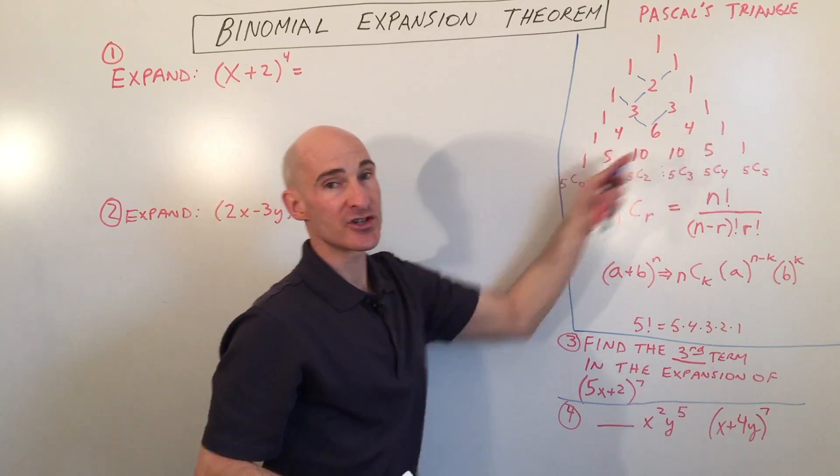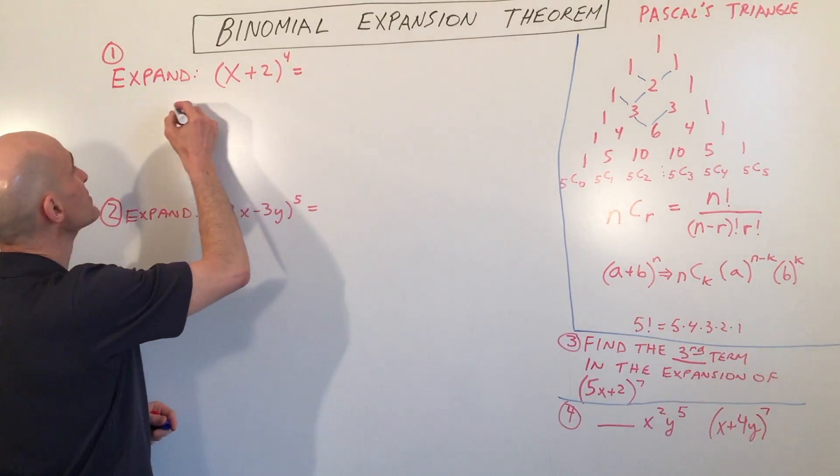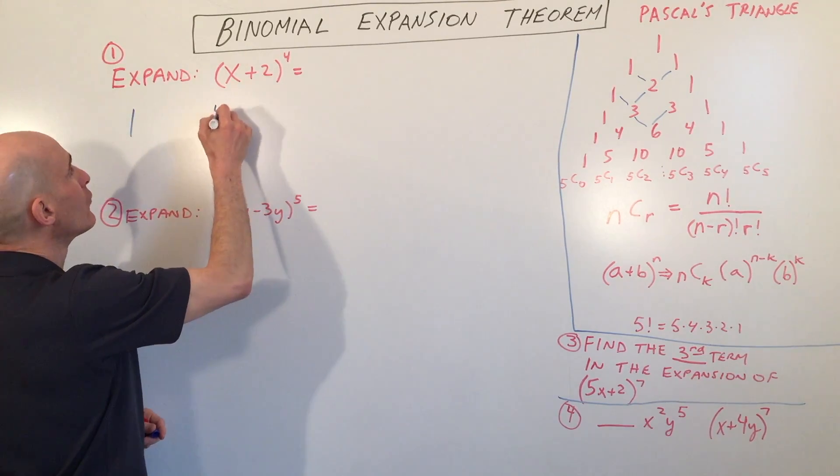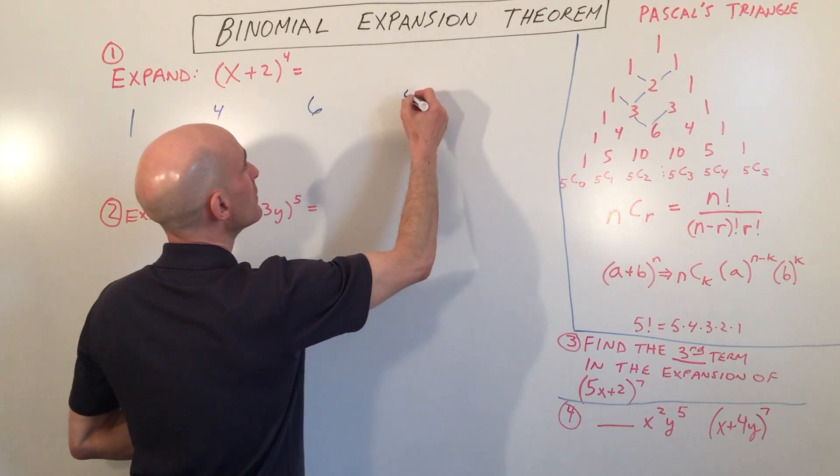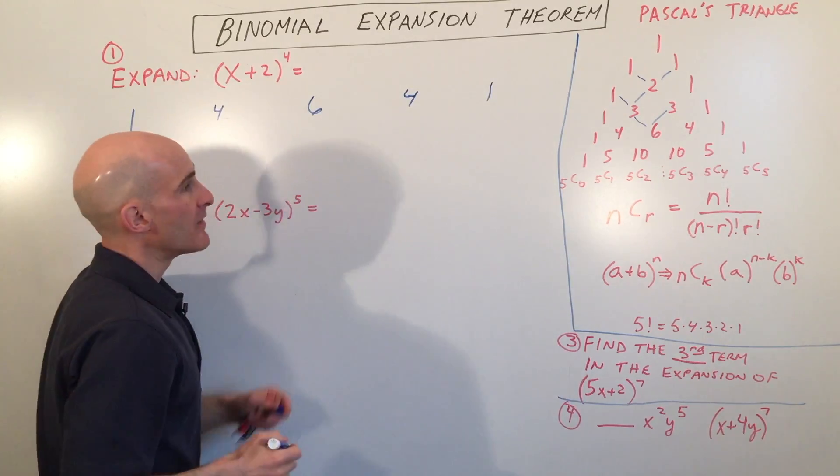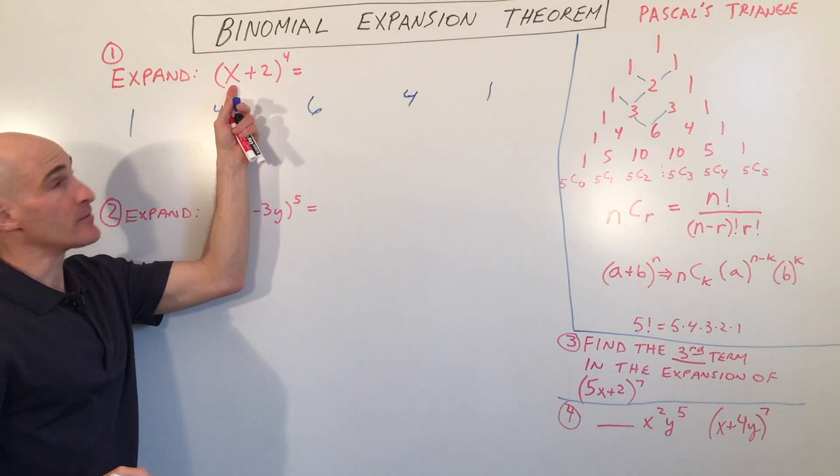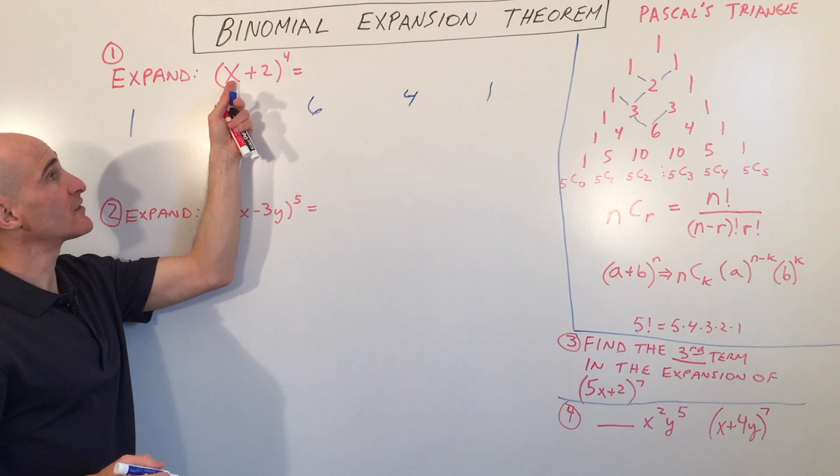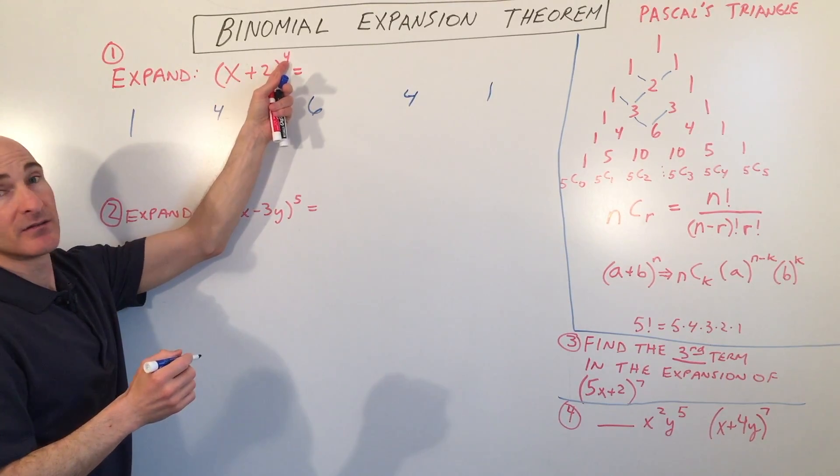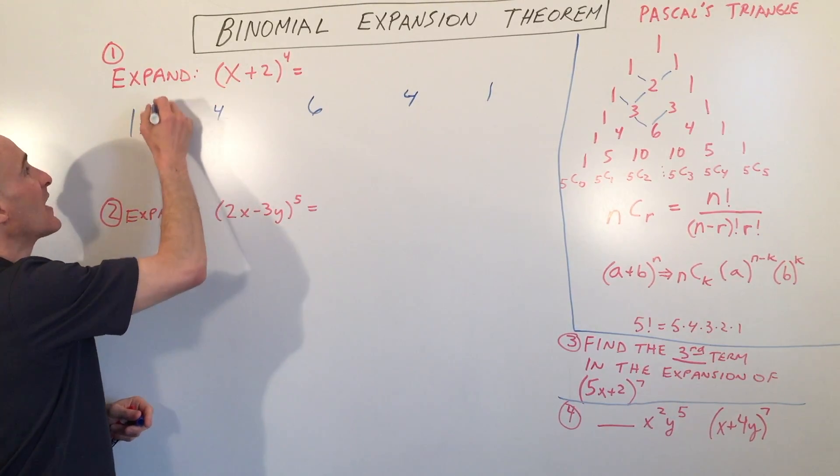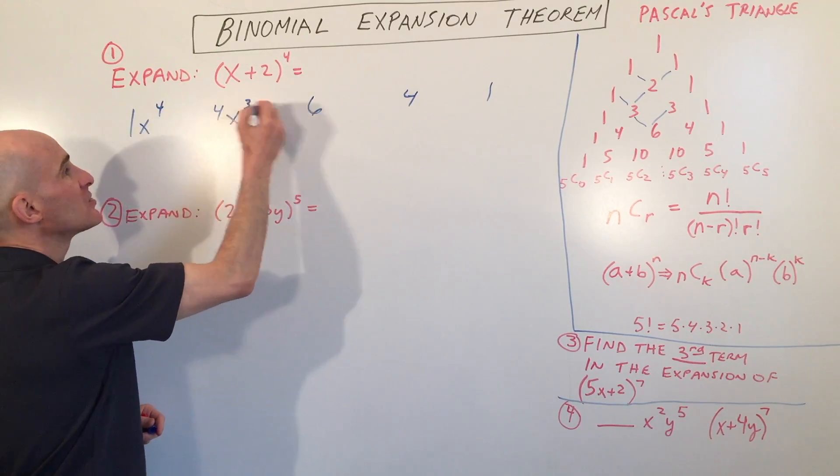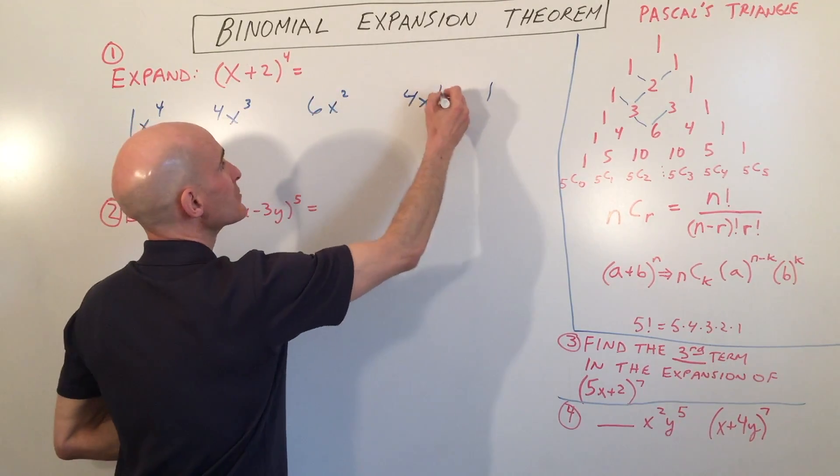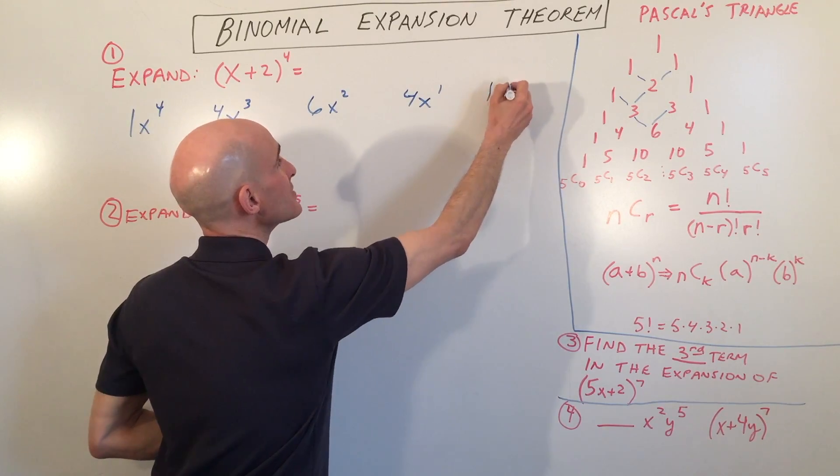These are going to be our coefficients. So I'm going to write this out as 1, 4, 6, 4, and 1. And then what I'm going to do is I'm going to take this first term, because a binomial is two terms, I'm going to take the first term to the highest power here. So that's going to be x to the fourth, x cubed, x squared, x to the first, x to the zero.